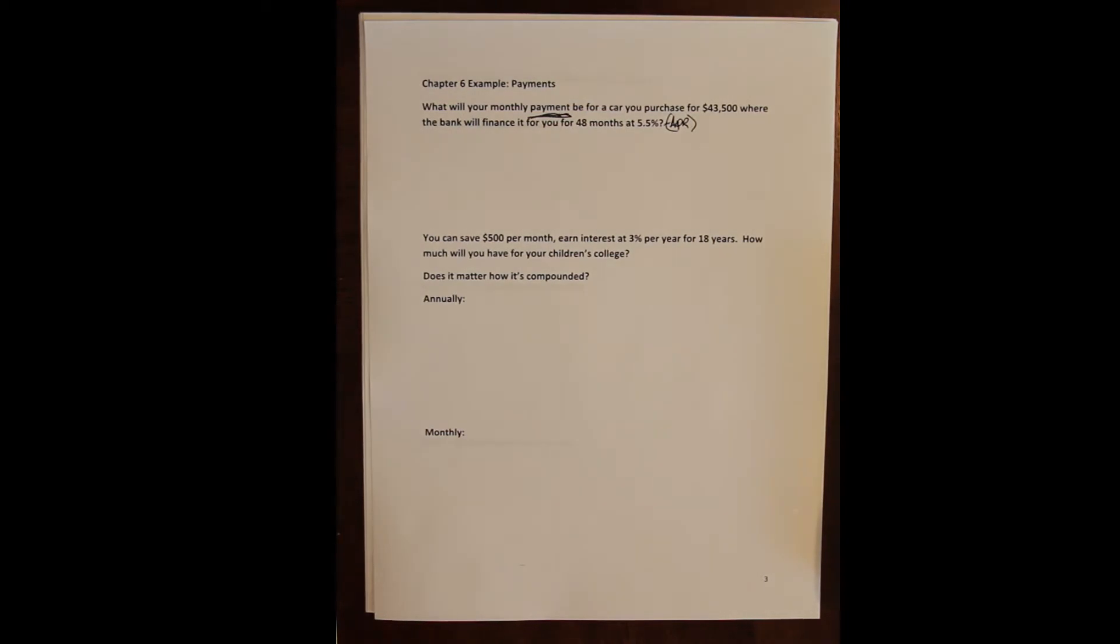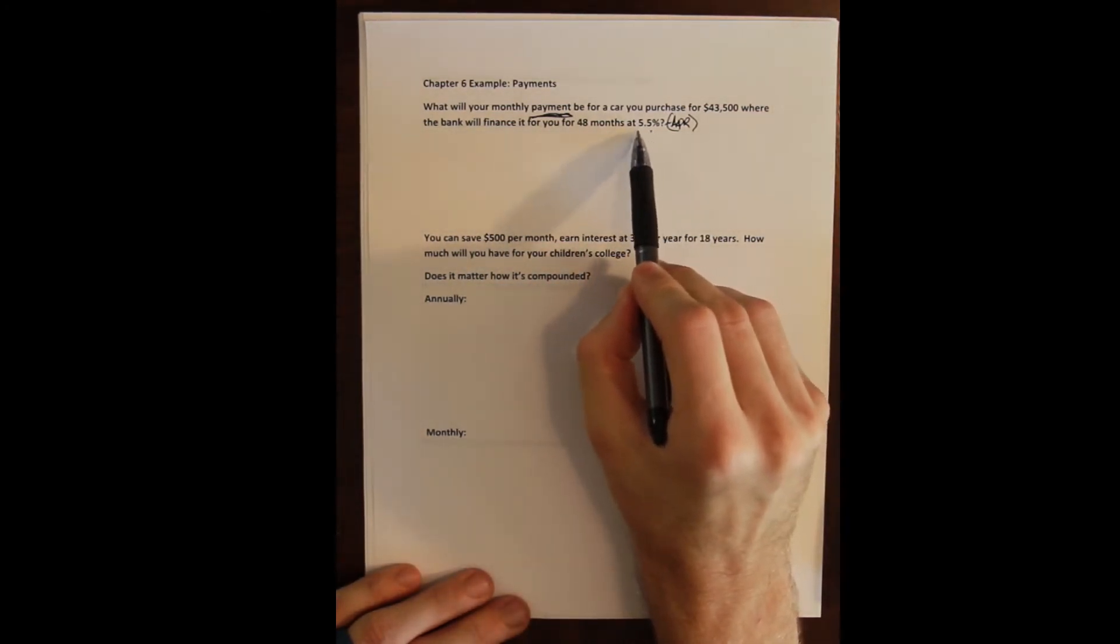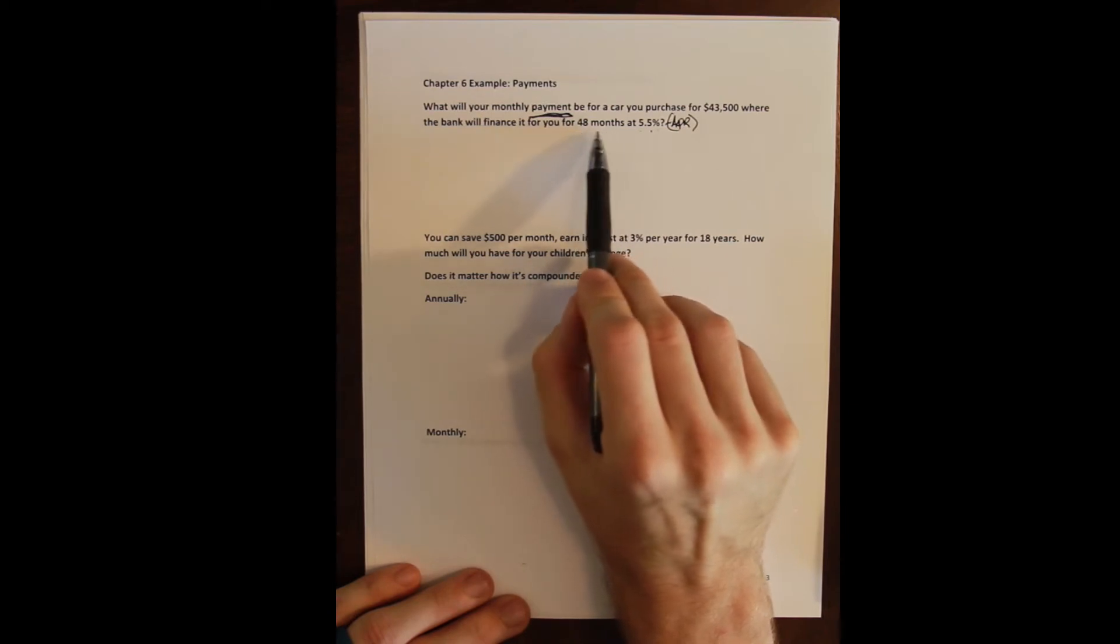So we want a monthly payment, we are going to have to convert this to a monthly rate. Our N has already been converted. This is four years converted into 48 months.